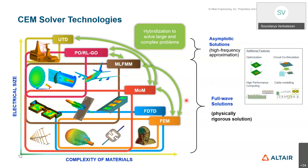When we talk about CEM solver technologies, FEKO has different types of solvers. One set is called full wave solutions: MOM (Method of Moments), MLFMM (Multi-Level Fast Multipole Method), FEM (Finite Element Method), and FDTD (Finite Difference Time Domain method). All four are called full wave solutions of FEKO and are physically rigorous solutions. We compared the computation time and memory these different solutions require for different kinds of applications.